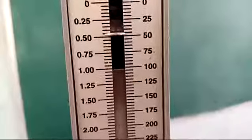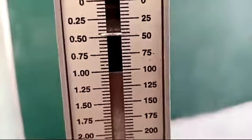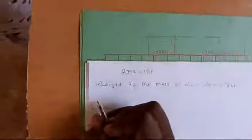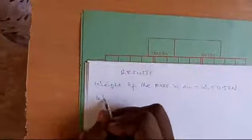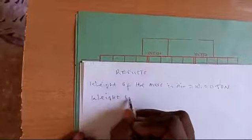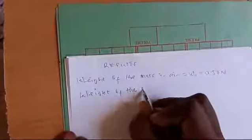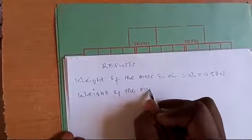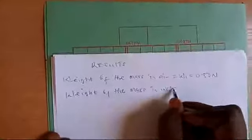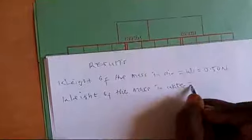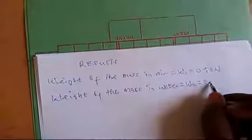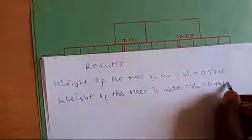Record the spring balance reading as W2. The weight of the mass in water, W2, equals 0.45 N.